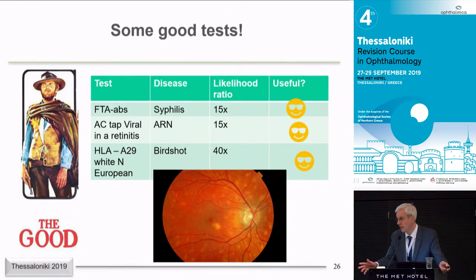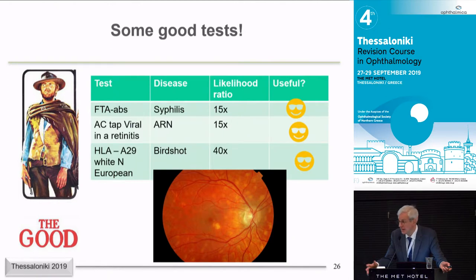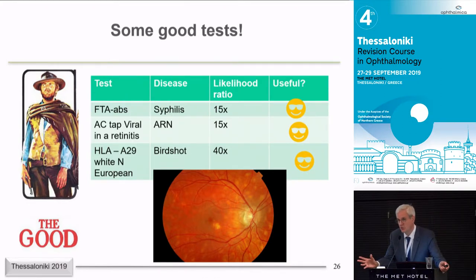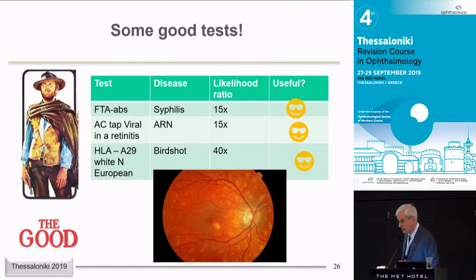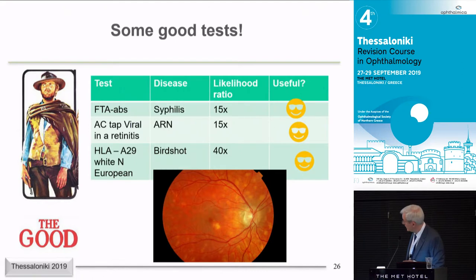AC tap for viral retinitis: if a patient walks in with an acute retinitis — differential includes ARN, toxo, treponemal disease — an AC tap has pretty good sensitivity and specificity for viral retinitis. And of course birdshot chorioretinopathy has an extraordinarily strong linkage with the HLA-A29 haplotype — the strongest HLA association in medicine. You shouldn't blanket-test all patients for A29, but if you see a northern European white patient with birdshot lesions and do the A29 test and it's positive, the likelihood of birdshot goes up about 40-fold — a massive effect.